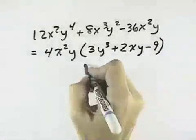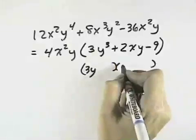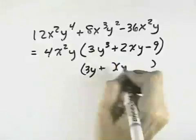Now we have 3 terms left, and we might try to break that down, setting up our parentheses. We know the first terms have to be a 3y and a y. We know we have opposite signs.